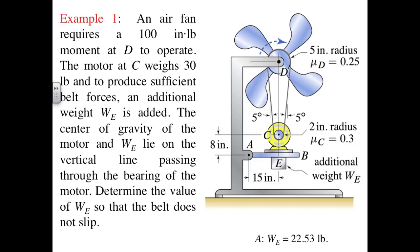The dashed blue arrow at D shows the direction of motion, telling us that the motor at C is providing a clockwise torque. The motor at C is the ultimate source of motion, and this tells us where the high and low side tensions occur on the belt. We are asked to choose an additional weight W_e so that the belt does not slip anywhere in the assembly. Note that we have different friction coefficients and different angles of wrap between the two contact areas at D and C, so it is unlikely we will reach slip simultaneously at both locations.